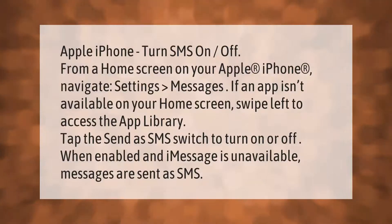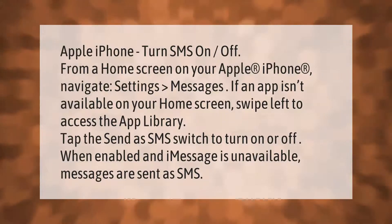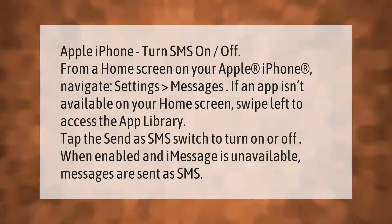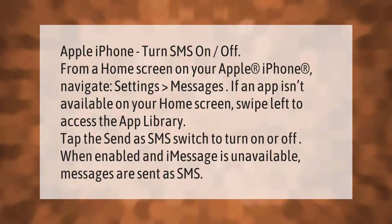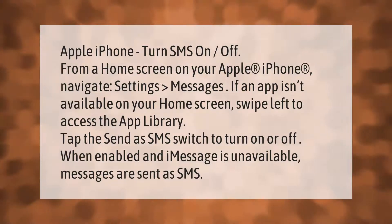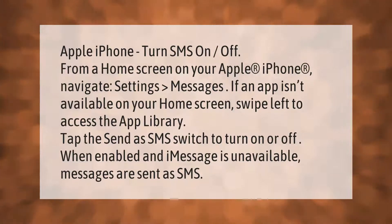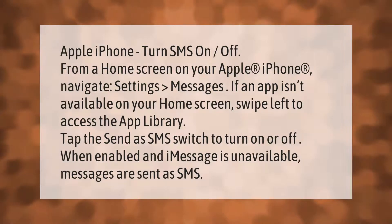Apple iPhone — turn SMS on or off. From a home screen on your Apple iPhone, navigate to Settings, then Messages. If an app isn't available on your home screen, swipe left to access the App Library. Tap the Send as SMS switch to turn it on or off. When enabled, if iMessage is unavailable, messages are sent as SMS.